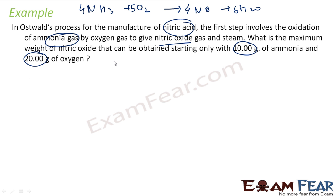The question says, what is the maximum weight of nitric acid that can be obtained starting with 10 gram of ammonia and 20 gram of oxygen. So in this, this is more of a question of limiting reagent. Because out of 20 and 10 gram, one will get consumed first. The one will get consumed first will decide the amount of NO.